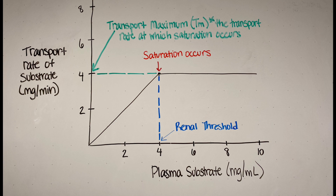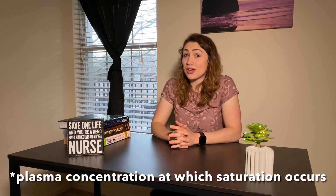Any increase in the concentration of a substance beyond transport maximum will not increase reabsorption, so everything else gets excreted as urine since we can't reabsorb it. The renal threshold is simply the plasma concentration at which saturation occurs. To illustrate these topics, let's take the example of glucose, which also has a clinical application.